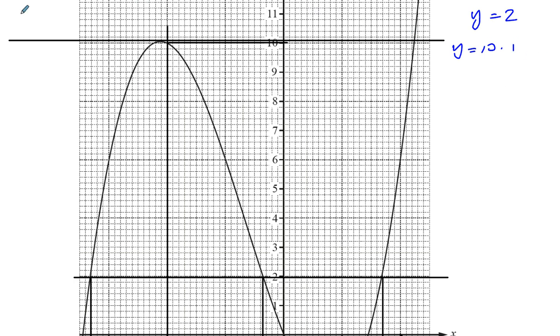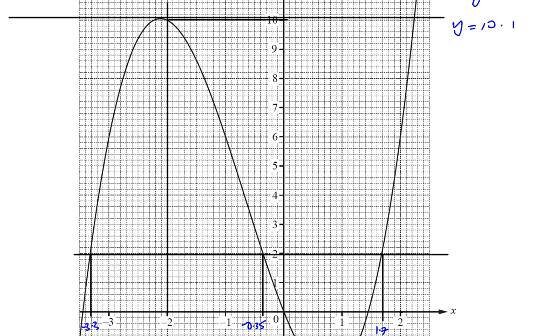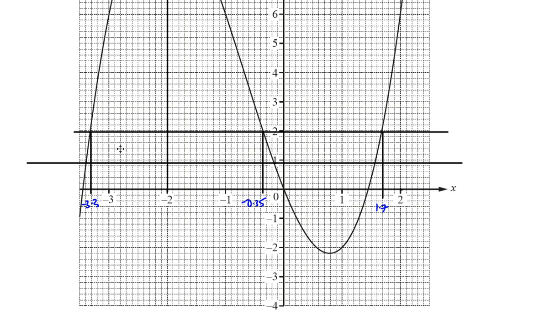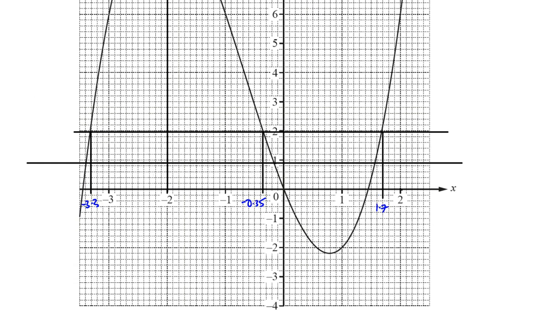And then the other one is going to be down here where the other place where it turns is going to be down here where the gradient is 0. Down here. The other one is down here. And that's going to be minus 2.2. And y equals minus 2.2.